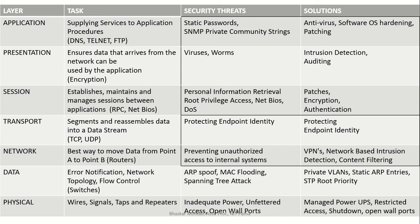In the network layer, the function is to move data from point A to point B through routers. Security threats involve preventing unauthorized access to internal systems, and solutions are VPNs, network-based intrusion detection, and content filtering. In the data link layer, tasks include error notification, network topology, and flow control. Security threats are ARP spoofing, MAC flooding, and spanning tree attacks. Solutions are private VLANs and static ARP entries.